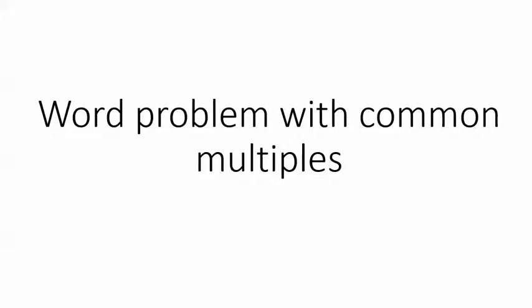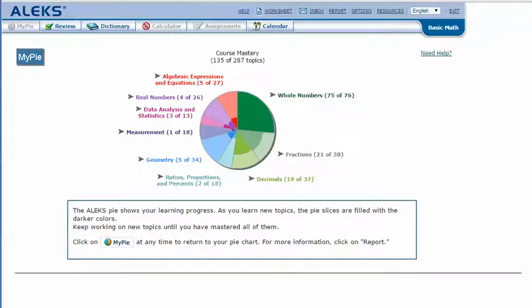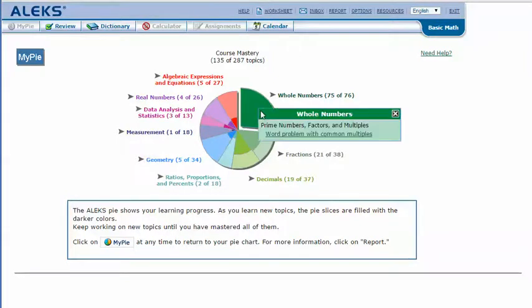Word problem with common multiples. In your Alex Pie, mouse over the dark green slice whole numbers to reveal the drop-down list of topics you need to cover. Click on word problem with common multiples.